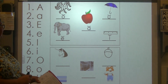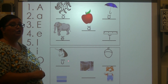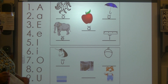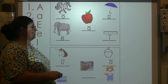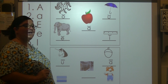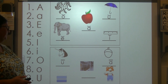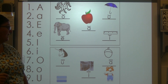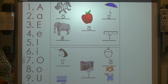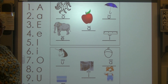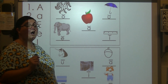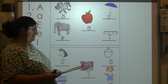Let's check your work. U — unicorn, long U, with a macron. A — acorn, long A, with a macron. I — icicles, long I, with a macron. E — equal, long E, with a macron. And O — overalls, long O, with a macron. Check your work.